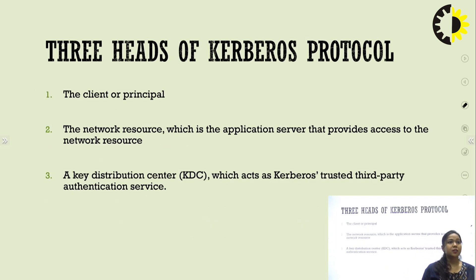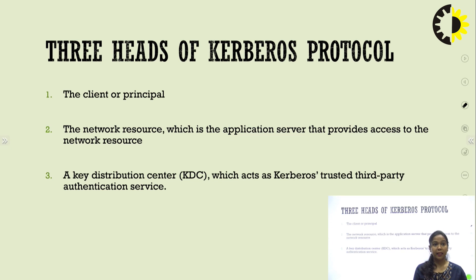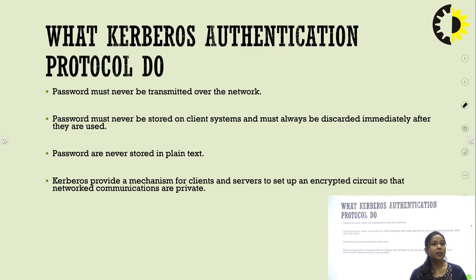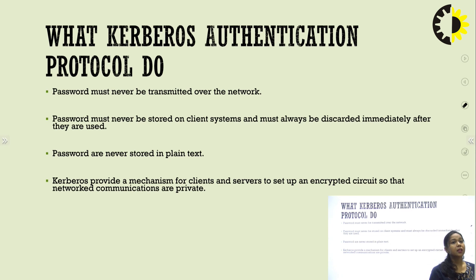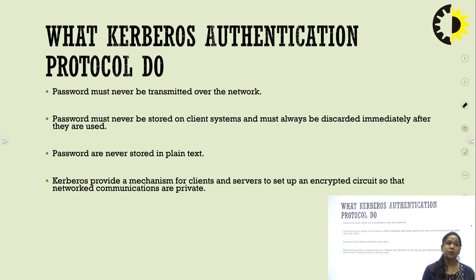The three heads of the Kerberos protocol are: first, the client or principal; second, the network resource which is the application server that provides access to network resources; and third, the Key Distribution Center (KDC), which acts as the Kerberos trusted third party and authenticates the authentication server. The Kerberos authentication protocol ensures passwords are never transmitted over the network, never stored on the client side, immediately discarded after use, and never stored in plain text. Kerberos provides a mechanism for client and server to set up an encryption circuit to keep network communication private.